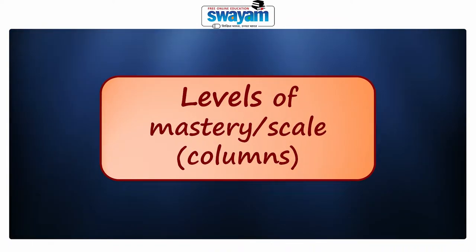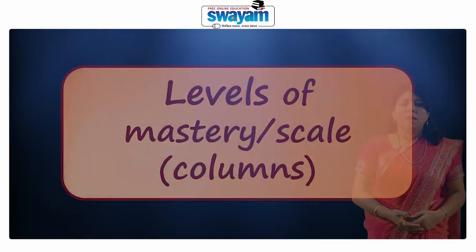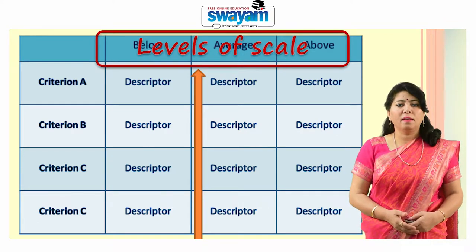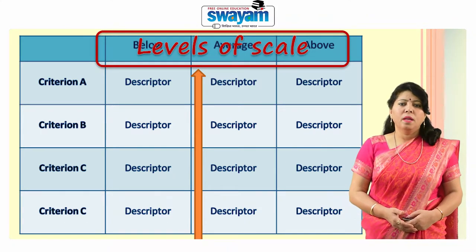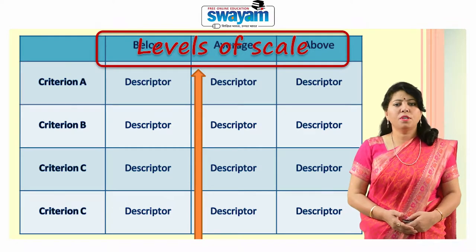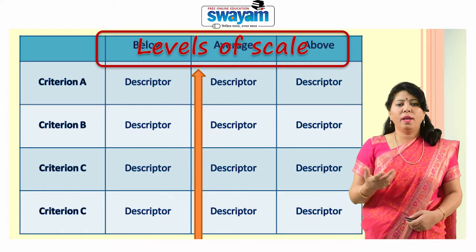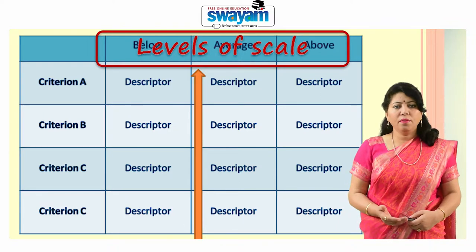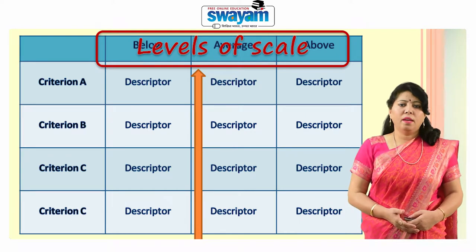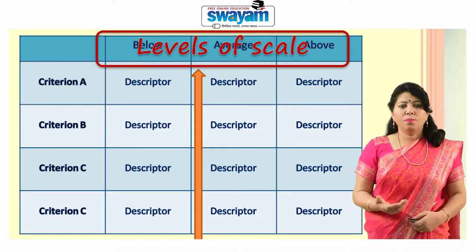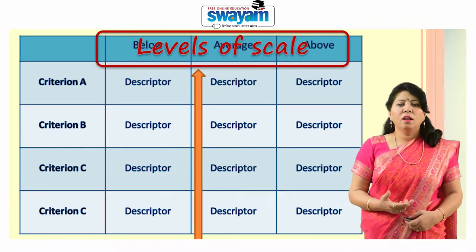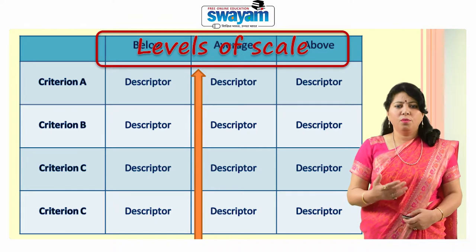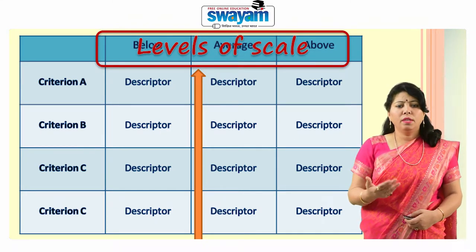The second component is levels of mastery. The columns of the rubric are called levels, and they describe varying descriptions of student success. We can write levels in both qualitative and quantitative ways. For example, qualitatively: exemplary, acceptable, unacceptable, or proficient, marginal, advanced. In numerical or quantitative form, we can use 1, 2, 3, 4, 5, or further.